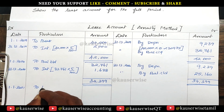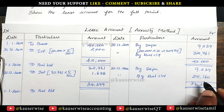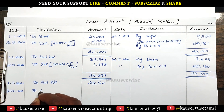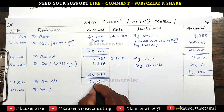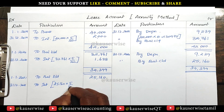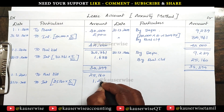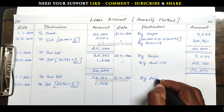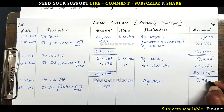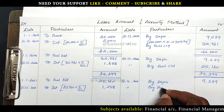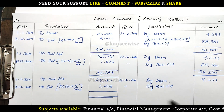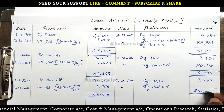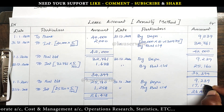On 1st January 2021, balance brought down: 25,160. At the end of the year, interest: 5% on 25,160 = rupees 1,258. By depreciation — same value according to the annuity method — rupees 9,239. By balance carry down: total 26,418. Balancing figure — closing balance — is rupees 17,179.